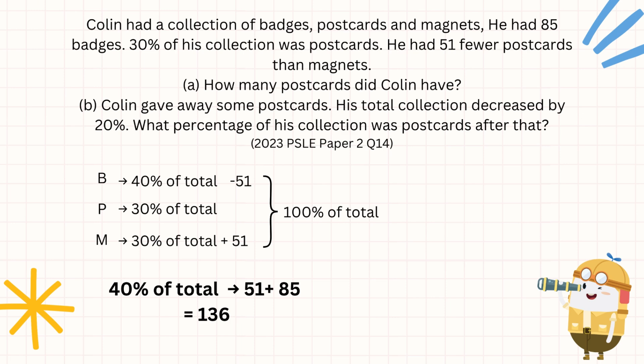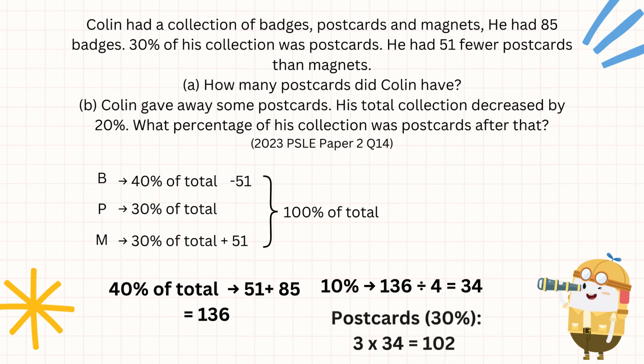Our key goal is to determine the number of postcards, and postcards we have figured out to be 30% of total. We can first divide to a simpler number, then multiply back to 30%. We can use 10% because it's a nice number to divide. 136 divided by 4, we get 34 — which means 10% of total is 34. For 30% of the total, times 3, we get our final answer of 102.